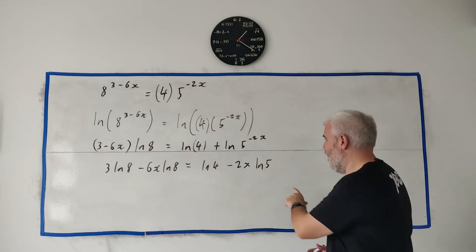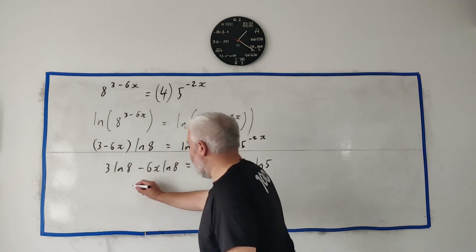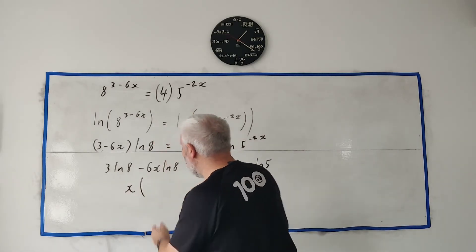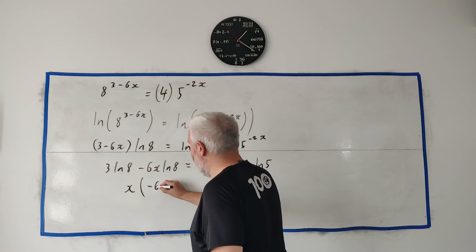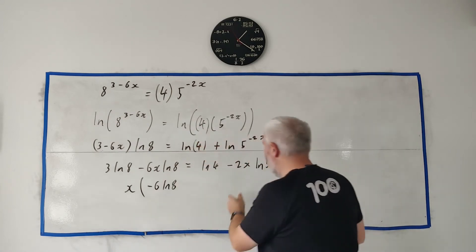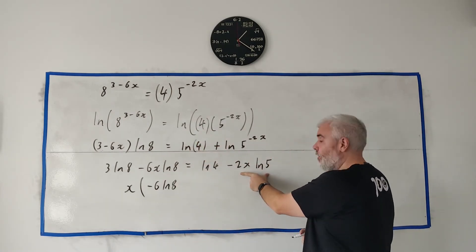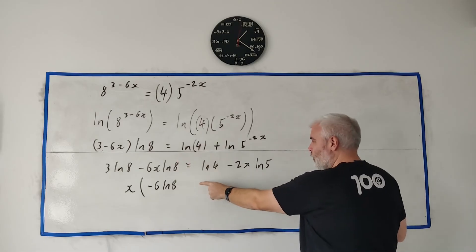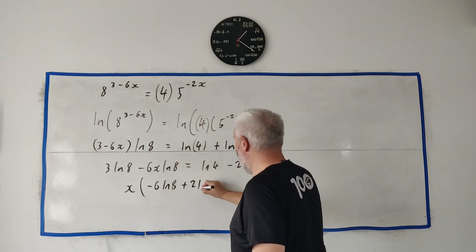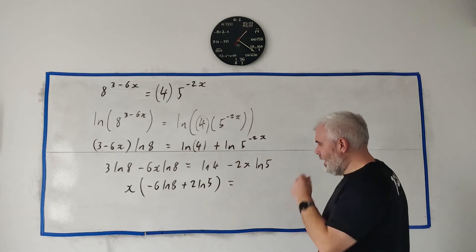We remember we want to solve for x, just move all the x's over one side. Let's move everything over this side and we'll take x out. So here if we take x out of this we get minus 6 natural log 8, and this guy, if we add this term to both sides, it will come over here as a plus 2 natural log 5. And that'll equal...